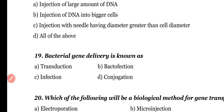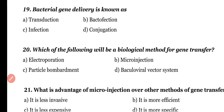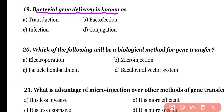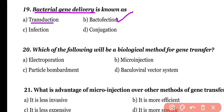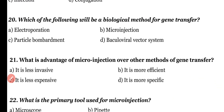Question 19. Bacterial gene transfer/gene delivery is known as: transduction, bactofection, infection, or conjugation. Correct answer is option B. Bacterial gene delivery method is known as bactofection, while viral gene delivery or gene transfer by virus is known as transduction.